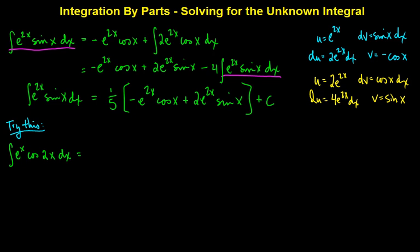Once again, how do we know we're going to use this solving for the unknown integral strategy? It's because we have e to the x and cosine. So we have exponential and trigonometric, and neither of them are going to wind down to zero, so we're going to have to use a different type of strategy.